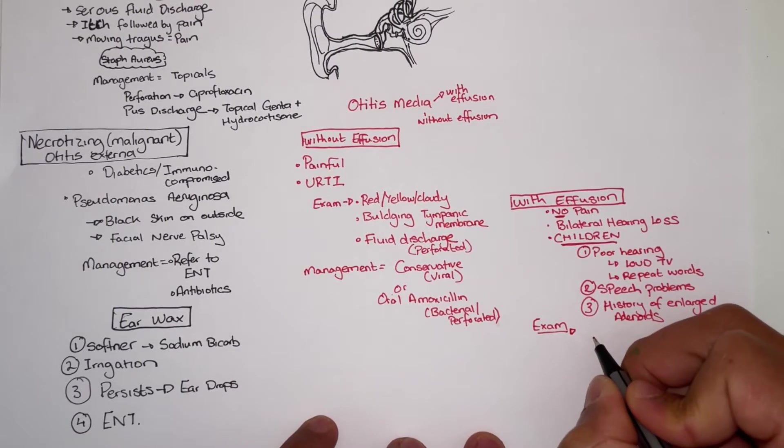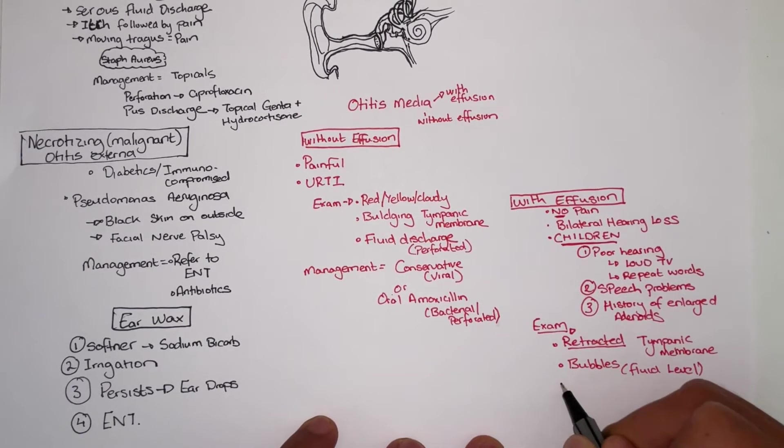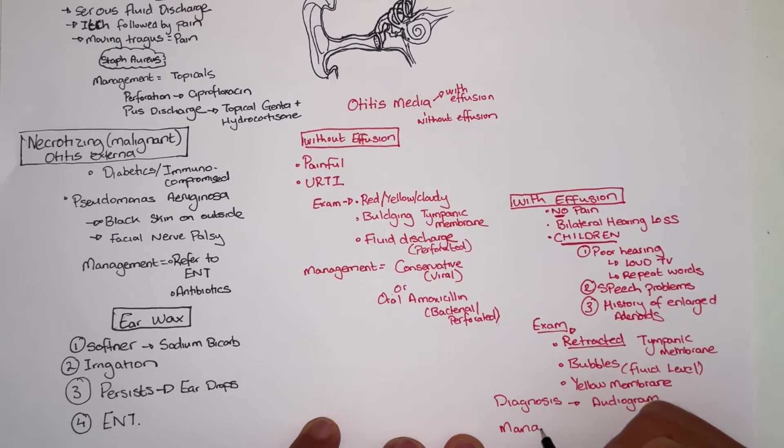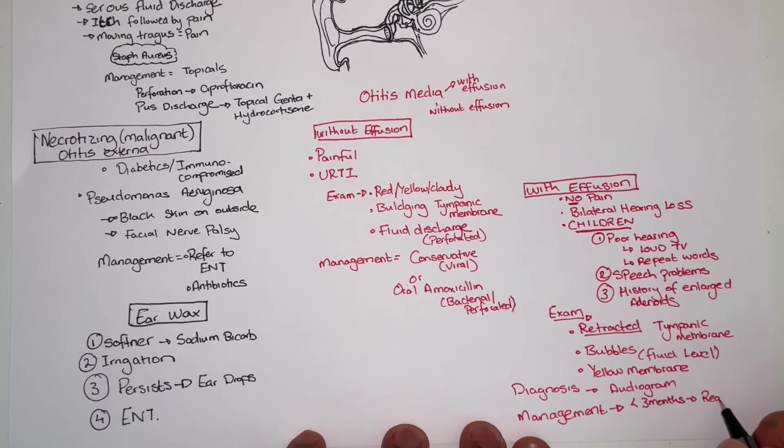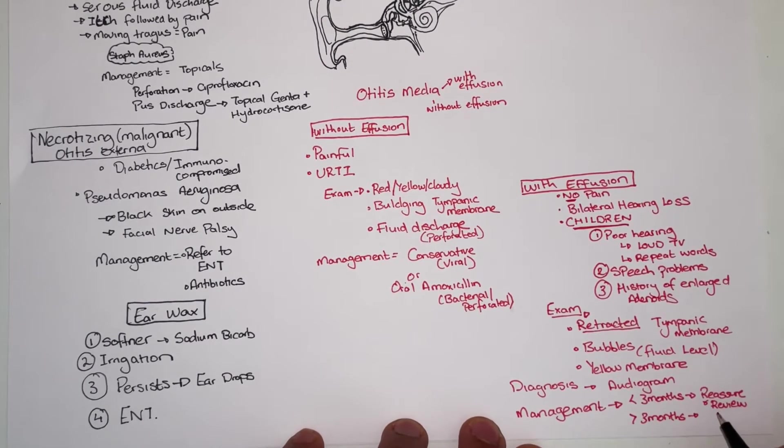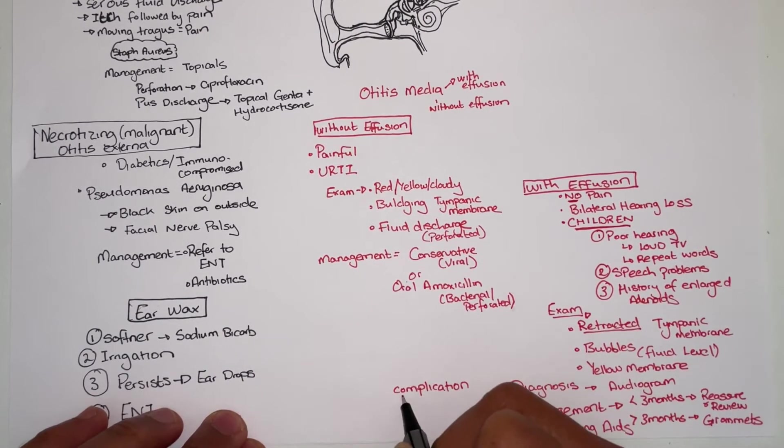On exam you will find different findings. You will see a retracted tympanic membrane, bubbles or a fluid level and you will see a yellow membrane. The diagnosis is confirmed with audiogram. If the child is less than three months you will reassure and review. If they are older you will have to refer to surgery for them to put in a grommet and if that fails then hearing aids will be needed.